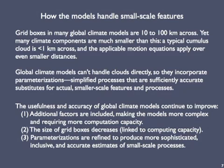Now, I debated omitting this slide, which may involve more of the nitty-gritty of modeling than you care about — if that's the case, just tune out and do something else until the next slide. Grid boxes in many global climate models are 10 to 100 kilometers across, but that's still far larger than many elements of the climate system. For example, a cumulus cloud is less than a kilometer across, and the equations describing winds and other relevant processes within a cloud operate over much smaller distances. GCMs can't handle small features like clouds directly, so they use parameterizations — simplified processes that are sufficiently accurate substitutes or proxies for actual finer-scale features and processes. Parameterizations are constantly being refined to produce more sophisticated, inclusive, and accurate representations of climate.